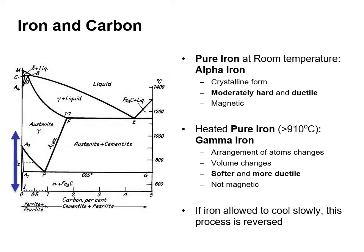Whereas heated pure iron, known as gamma iron, the arrangement of the atoms changes, the volume changes, it's softer and more ductile, and it's not magnetic. If iron is allowed to cool slowly, this process is reversed.